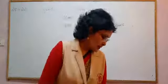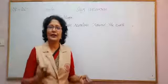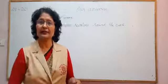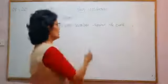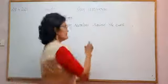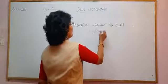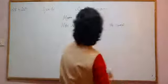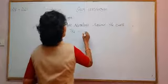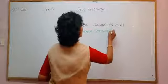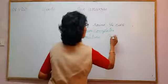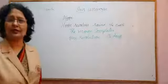The moon completes one revolution around the earth in 28 days. Just like the earth completes one rotation in 24 hours and one revolution in one year — that is 365 and a quarter days — the moon completes one revolution around the earth in 28 days. You have to remember this.